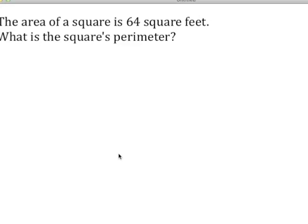We'll deal with perimeter and circumference. Let's take a look at this first problem. The area of a square is 64 square feet and we want to find the square's perimeter.